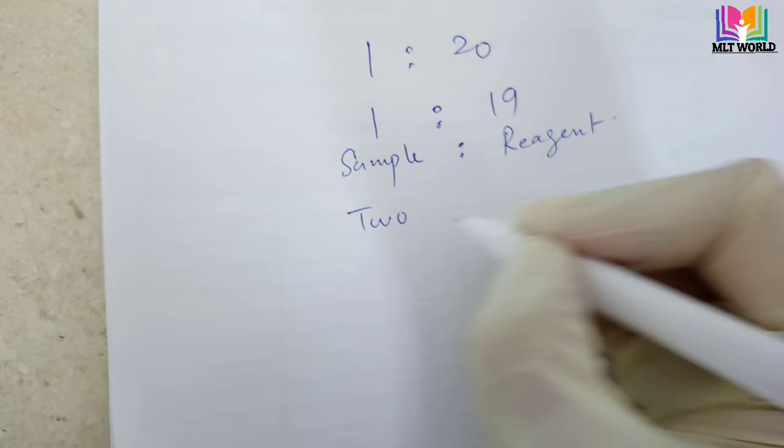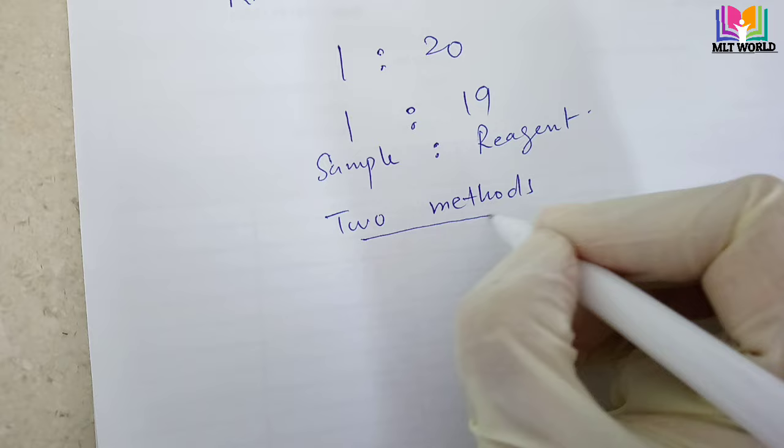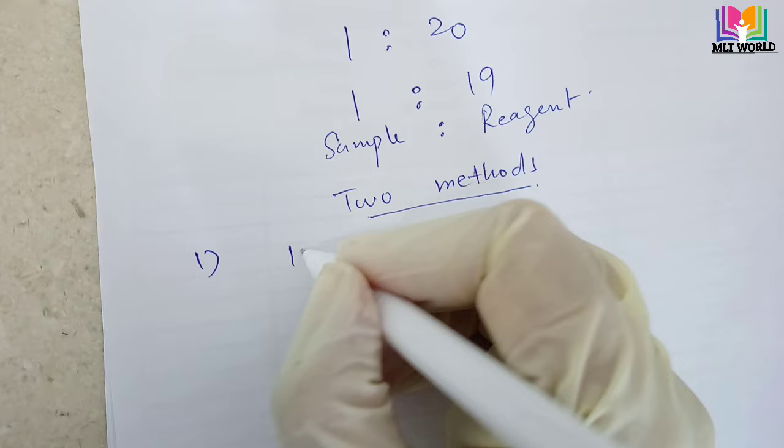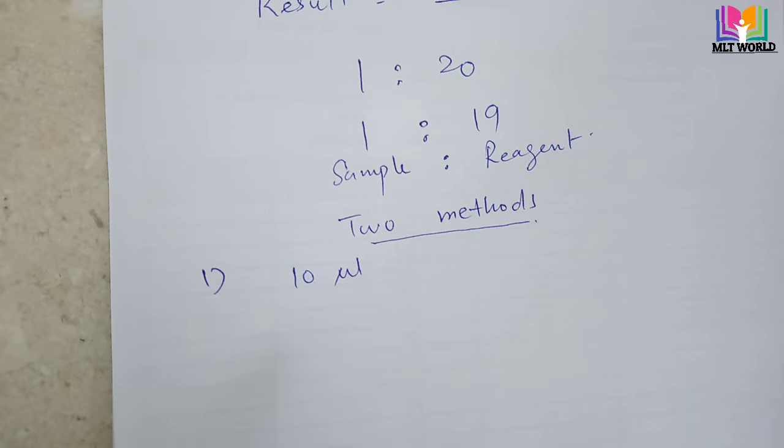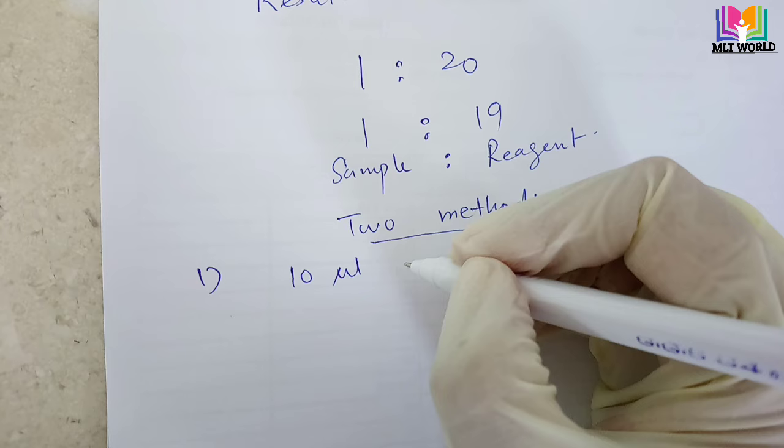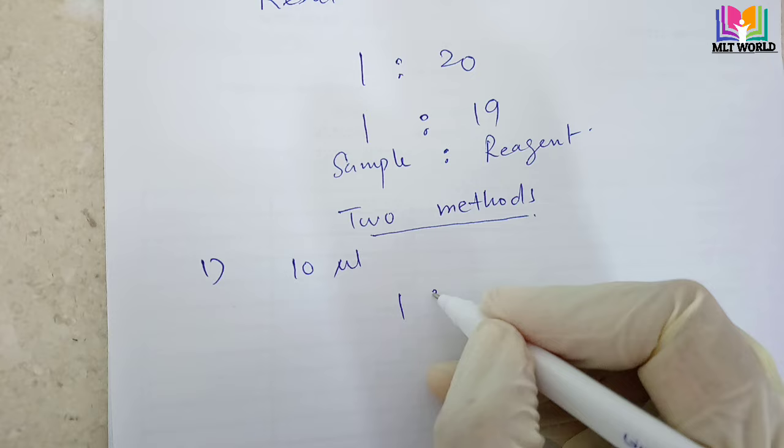In the first method I will show how much sample we will use, and in the second method how much sample we will use. In the first method we will use 10 microliters. If our sample is very less in quantity and we can use only 10 microliters, then how much sample and reagent do we need?